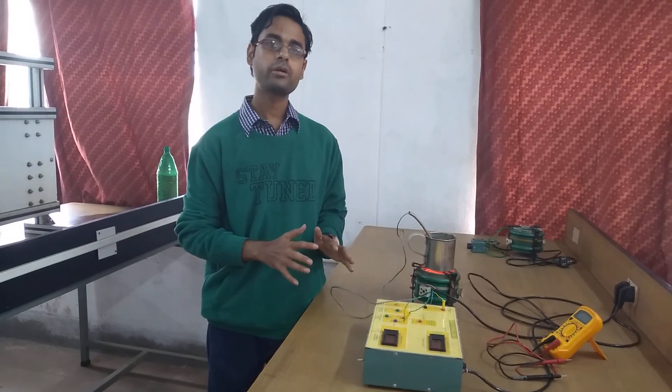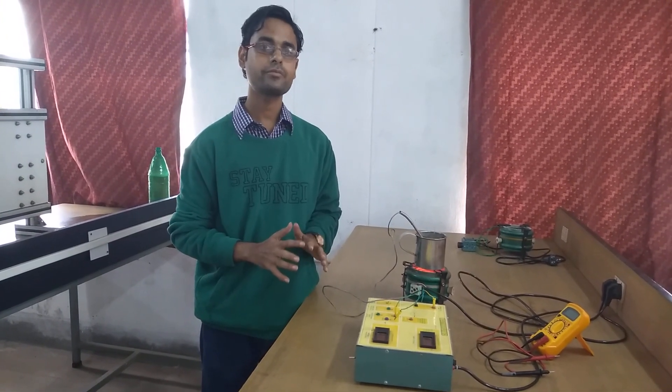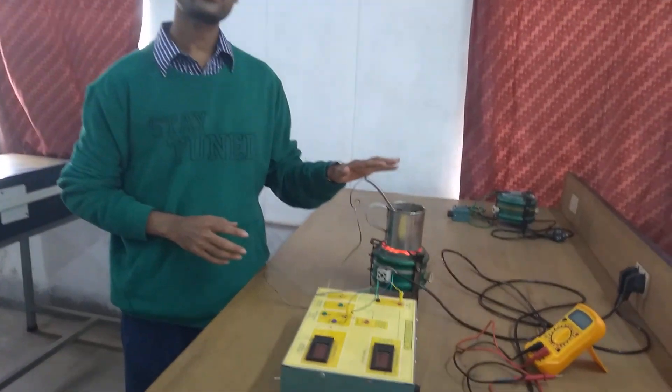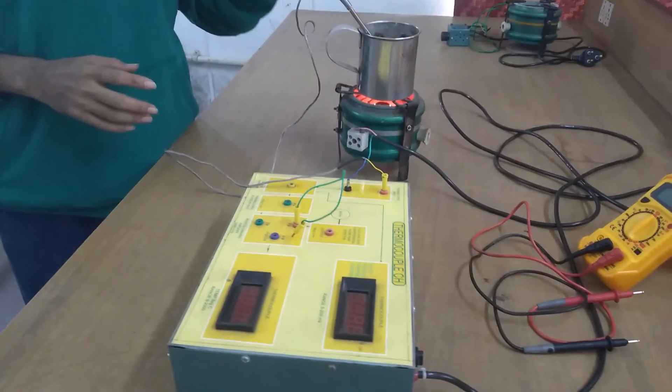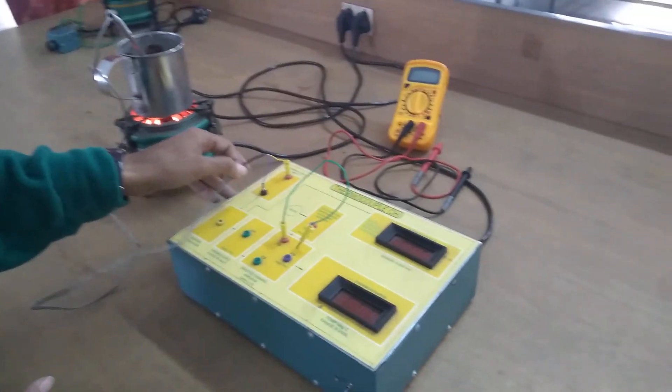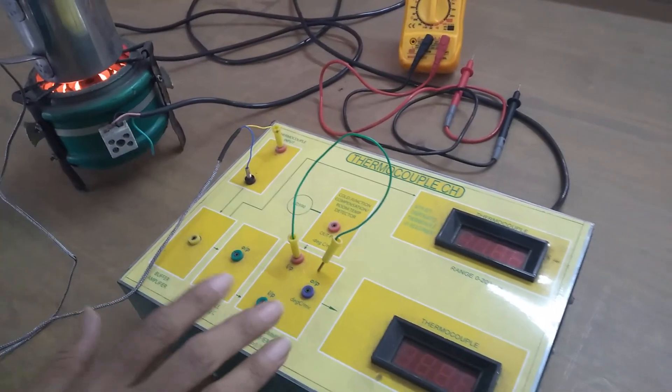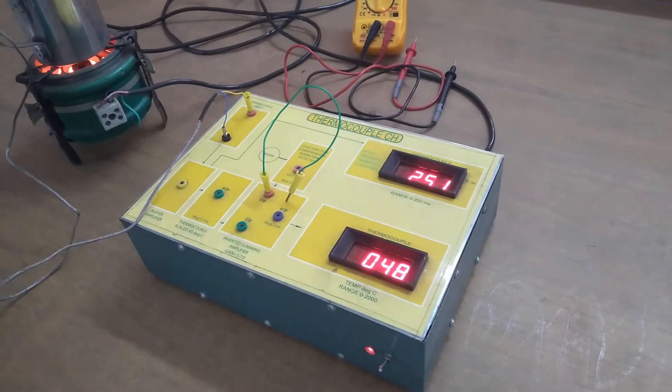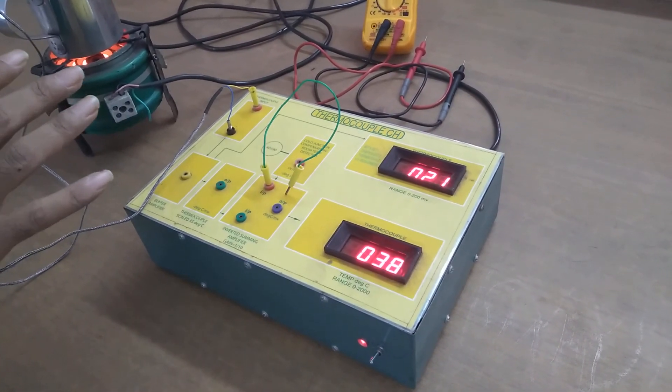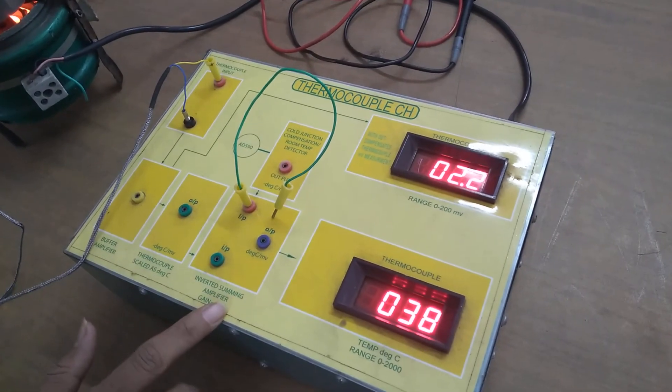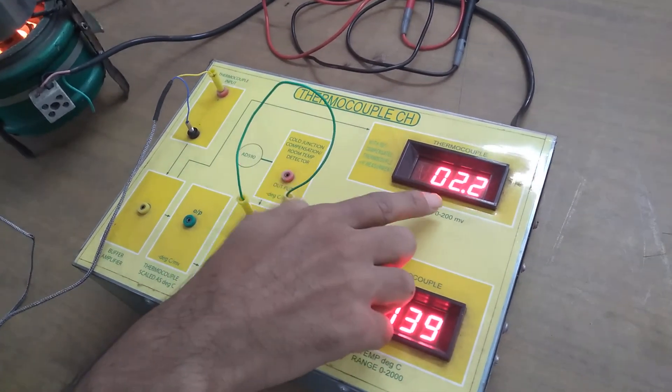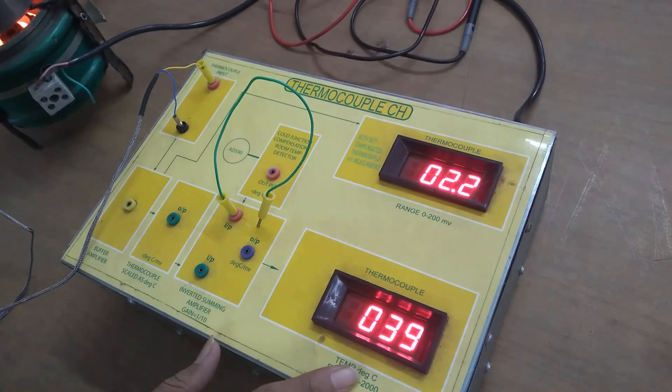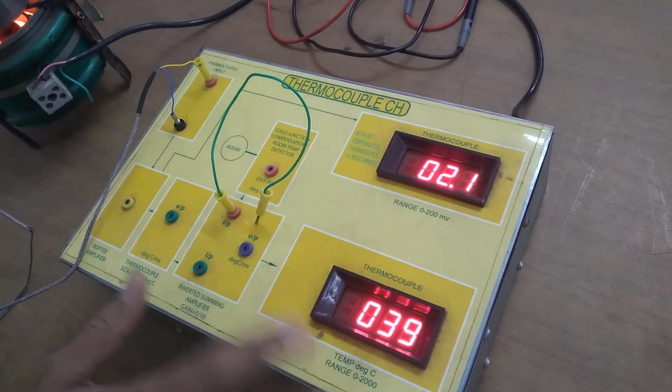So this time around we are going to look at the thermocouple trainer kit for conducting this experiment. For that purpose we have placed our thermocouple at process temperature and we have connected the two leads to these two ends of the thermocouple trainer kit. And if we turn on this trainer kit without cold junction compensation, what you find is that the thermocouple provides a millivolt of 2.3 and the corresponding temperature is around 39 degree centigrade. This is uncompensated.